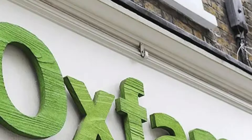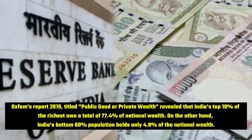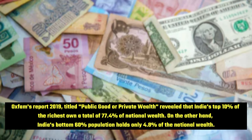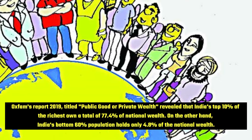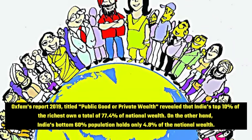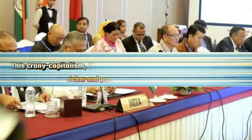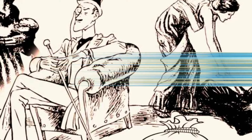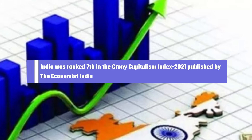All this is the result of crony capitalism. Oxfam's 2019 report titled 'Public Good or Private Wealth' revealed that India's top 10 percent of the richest owned 77.4 percent of national wealth. On the other hand, India's bottom 60 percent of the population holds only 4.8 percent of the national wealth. Because of crony capitalism, rich people in India are getting richer and poor people are getting poorer. India was ranked seventh in the Crony Capitalism Index 2021, published by The Economist.